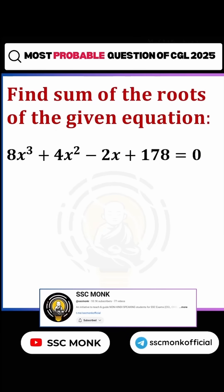Let's start with the question. Find the sum of the roots of the given equation. If p, q, r are the roots, p + q + r is equal to what? Minus b, that is coefficient of x², which is 4, by a, coefficient of x³, that is 8. This can be further written as -1/2.